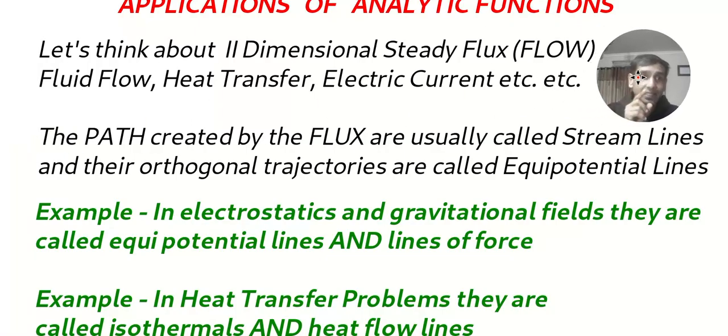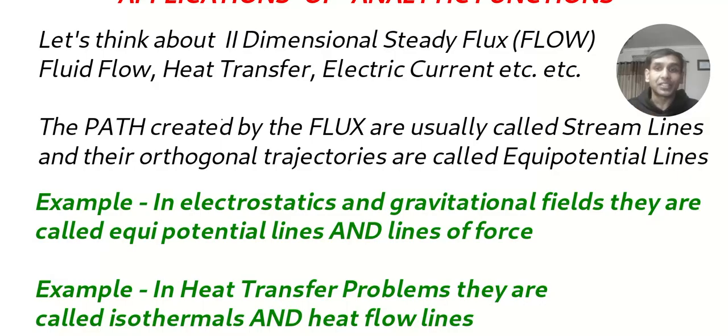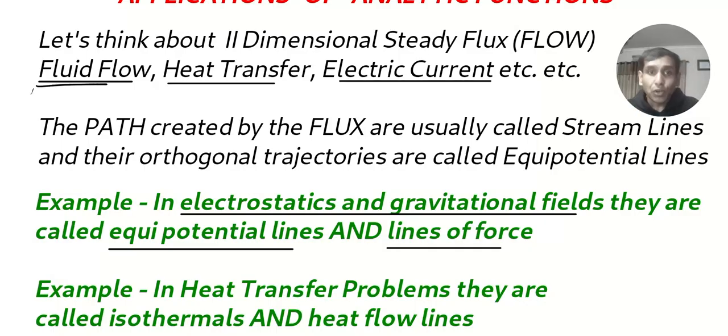Now look at this. If you understand this simple fact, then you can do any application question that they are going to ask in the math exam. In your applied subject, they are going to give you the real part and they are going to ask you the imaginary part. That's exactly what we did in the last two videos. But these people use some different names. In electrostatics and gravitational field, the real part and imaginary part has the names equipotential line and line of force.